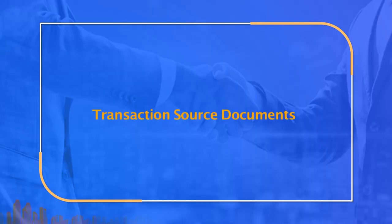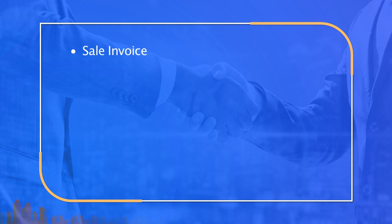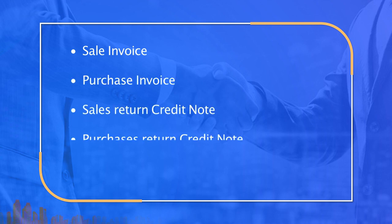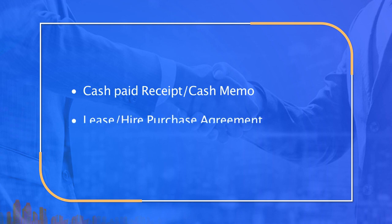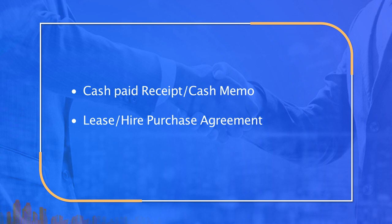Transaction source documents are the various documents which become a source for recording in the books of accounts. These include: sale invoice, purchase invoice, sales return credit note, purchase return credit note, cash received cash memo, cash paid receipt, cash memo, lease, and hire purchase agreement as vouchers.